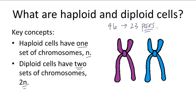One set comes from the mother, one set comes from the father, and a pair of chromosomes will include one chromosome from the mother and the father. So like this pair, this is from the mother, this is from the father. These two chromosomes within the pair are genetically different, but they code for the same thing.